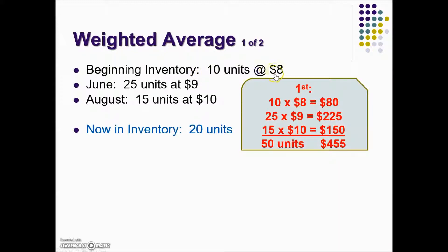So there were 10 units at $8, 25 units at $9, and 15 units at $10. The total number of units purchased was 50, and the total cost — when we multiply the cost per unit times the number of units — adds up to $455.